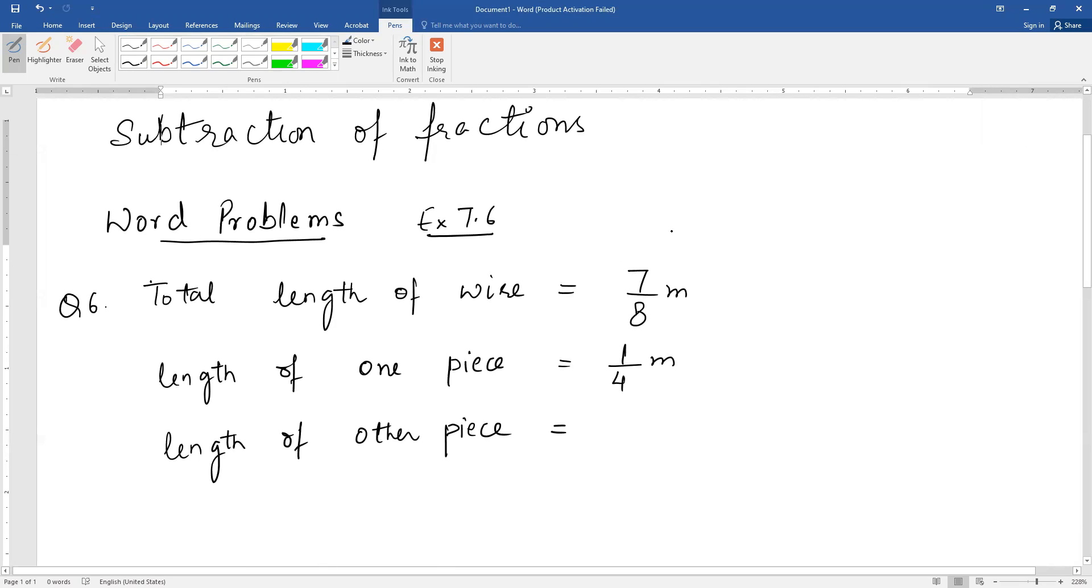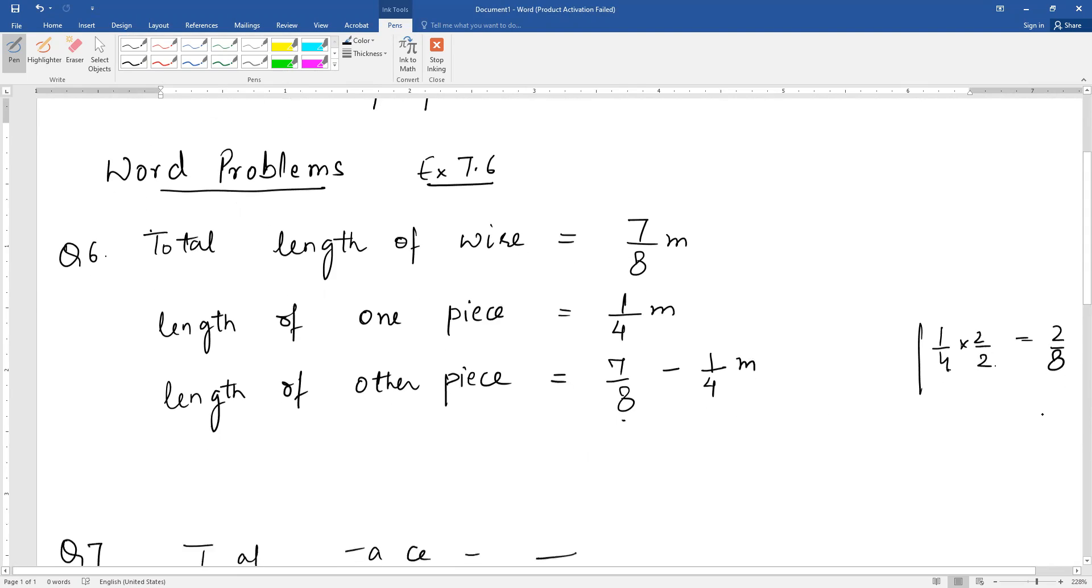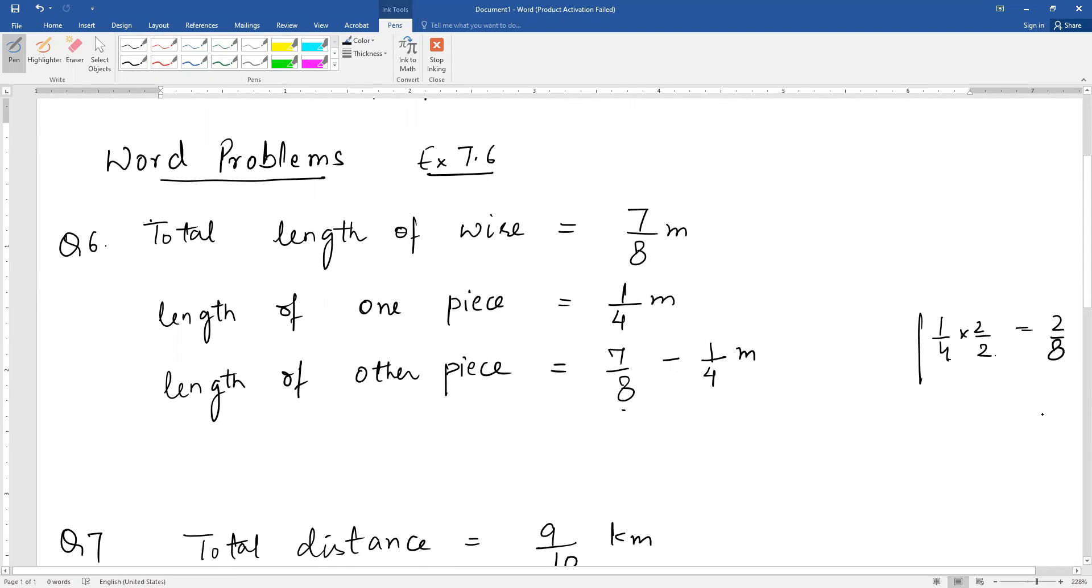Total length is 7/8 meters. One piece is 1/4 meters. For the other piece length, we will subtract it. Now there are unlike fractions. 1/4 can be written as 2/8. So we get 7/8 minus 2/8, that is 7 minus 2 by 8, and that is 5/8 meters.